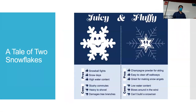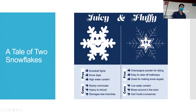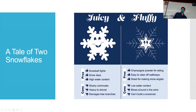Usually we think about snow as juicy snow and fluffy snow — there are different kinds of crystals. Juicy snow is great for snowmen and snowball fights; it has a high water content but it's heavy and can damage tree branches and make commutes really bad. Fluffy snow is great for skiing and easy to make snow angels and shovel, but it creates snow drifts, is hard to pack, and doesn't have a lot of water per volume — it's a lot less dense.